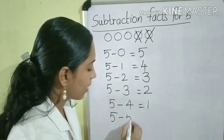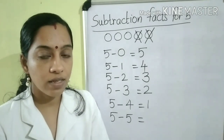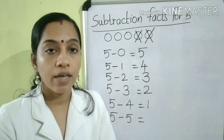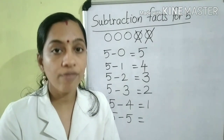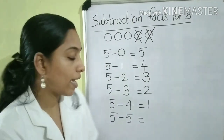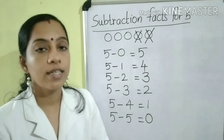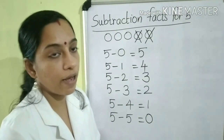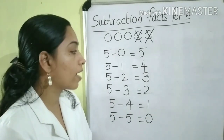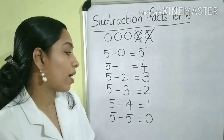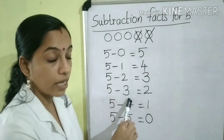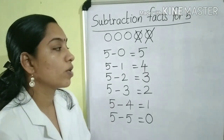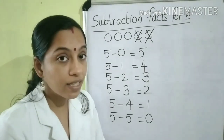The last one: we have to subtract 5 minus 5. What will be the answer if we subtract 5 from 5? We know the property — if any number is subtracted from itself, the answer is 0. That is, 5 minus 5 is equal to 0. So children, these are the subtraction facts for the number 5: 5-0=5, 5-1=4, 5-2=3, 5-3=2, 5-4=1, and 5-5=0. Is it clear?